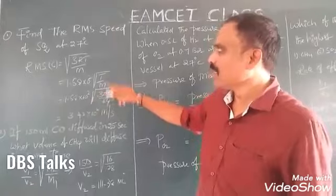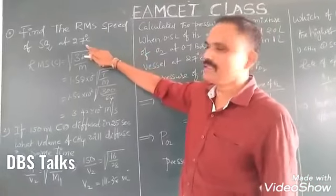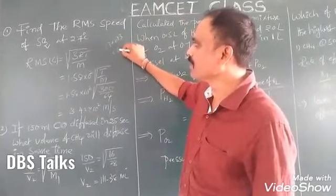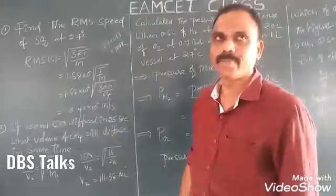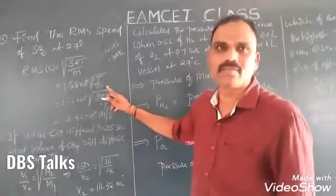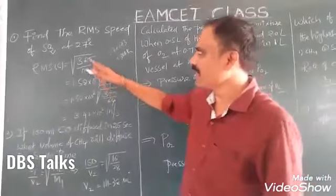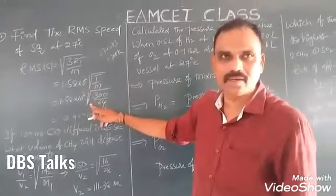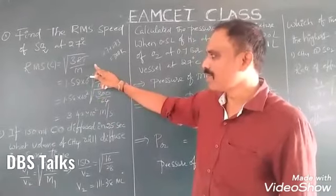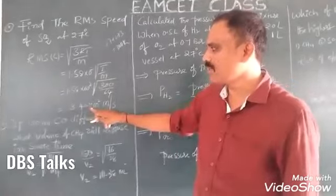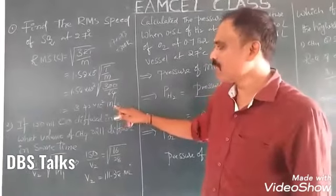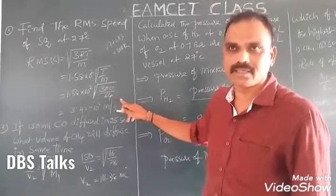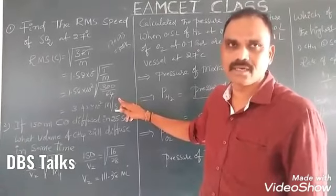Here the temperature is 27 degrees, which means 27 + 273 = 300 K. And the molecular weight of SO2 is 64. Then you can substitute the values in the given formula. You can get 3.42 × 10² m/s. This is one of the models to calculate the RMS velocity of a gas.